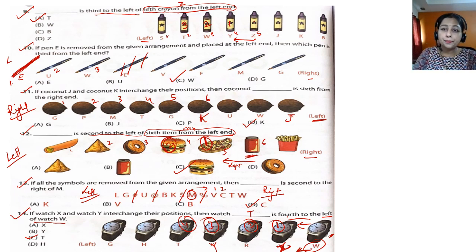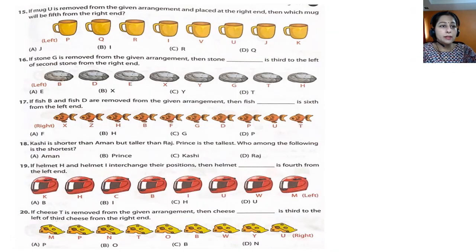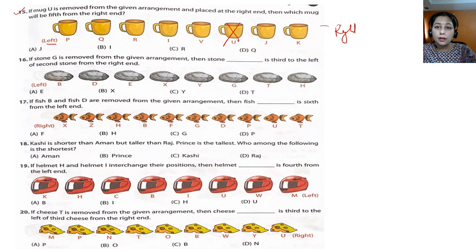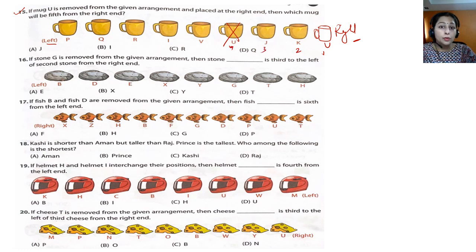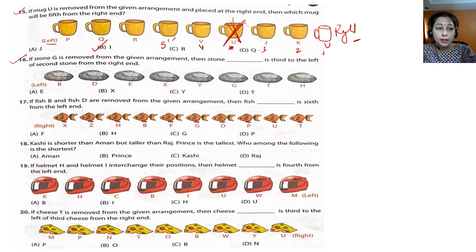Question 15: if mug U is removed from the given arrangement and placed at the right end, which mug is fifth from the right end? This is the left, so the right end is here. Place mug U at the right end. From the right: one, two, three, four — skip the removed slot — five. The answer is mug I, so option B.